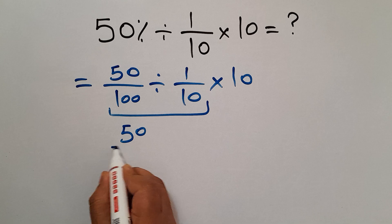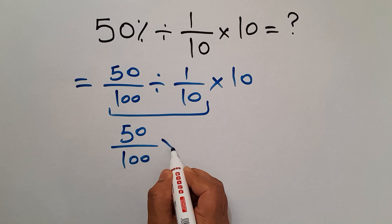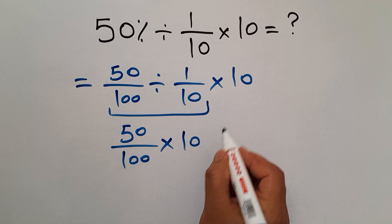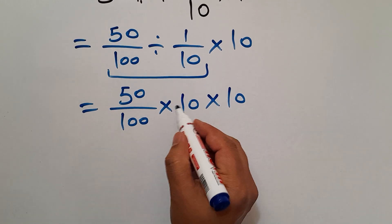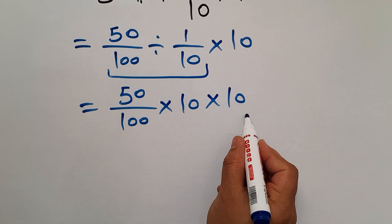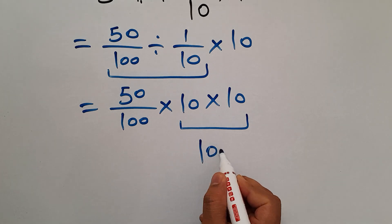as 50 over 100 times 10, and again times 10. And now 10 times 10 gives us just 100, so